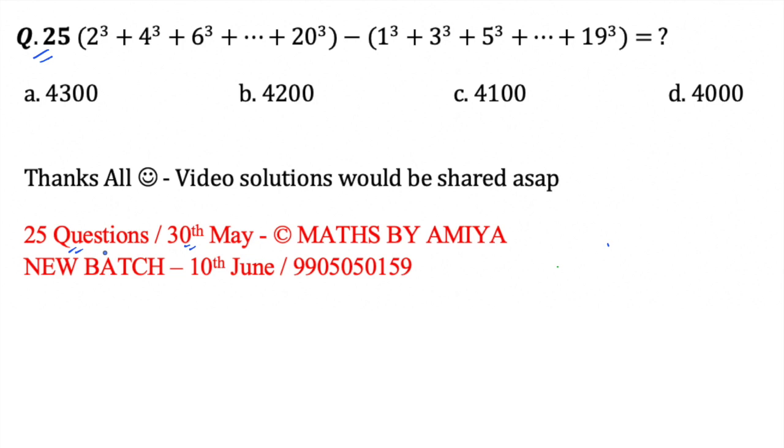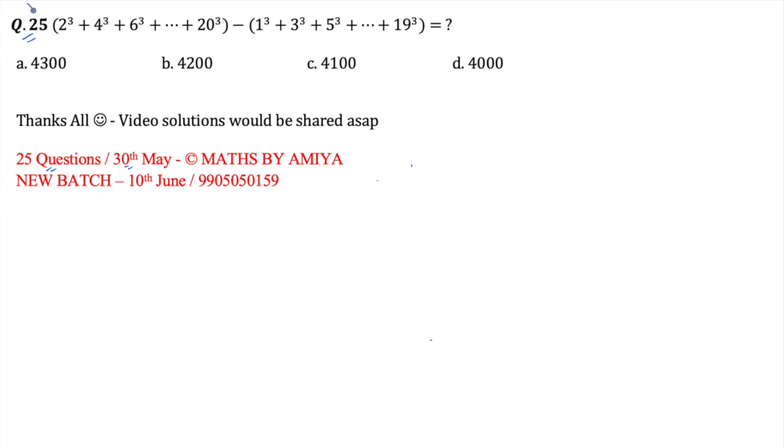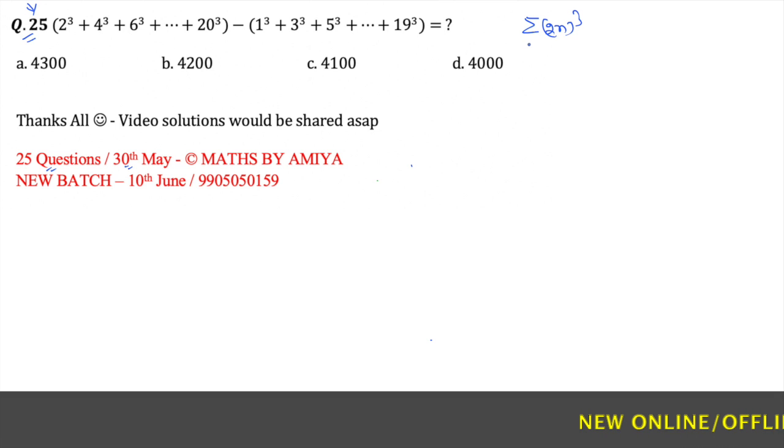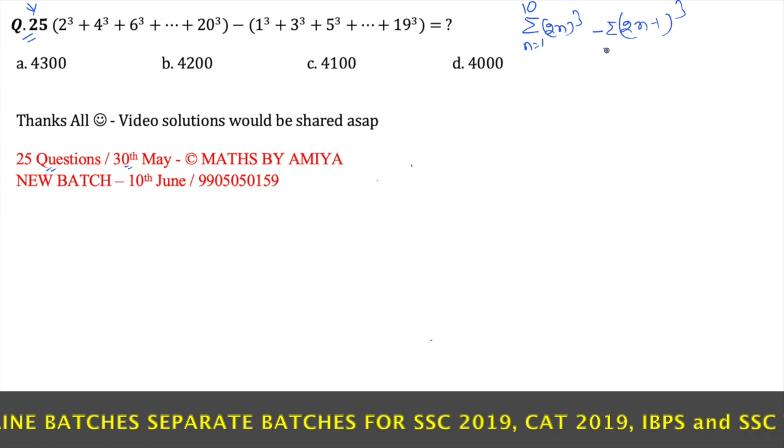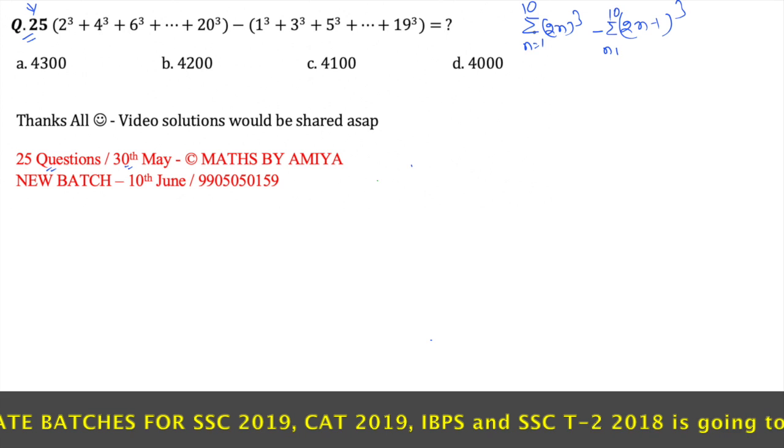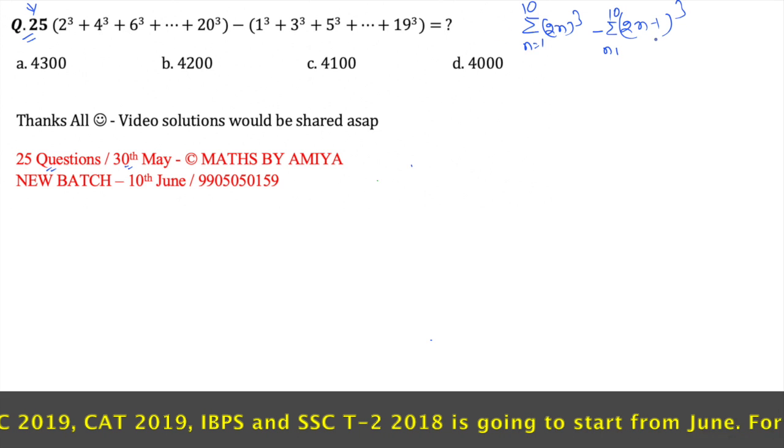So how to solve this question? The basic and conceptual way of solving this question is the sigma notation. This one is 2n all cube where n starts from 1 to 10 minus 2n minus 1 all cube where n starts from 1 to 10. We need to use the sigma notation and solve this question.